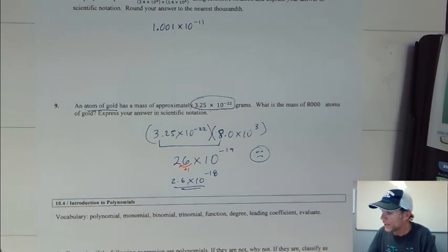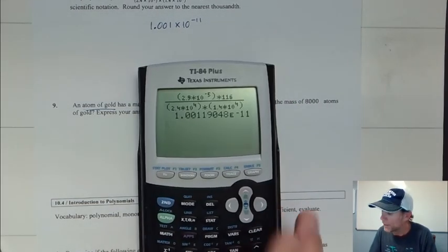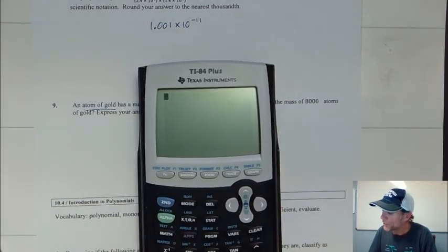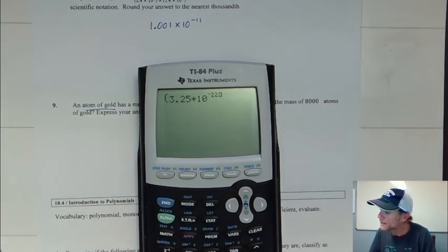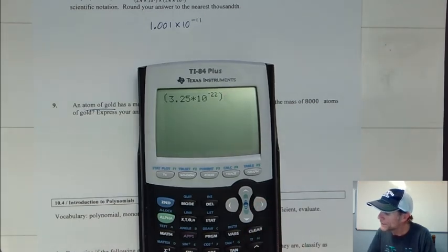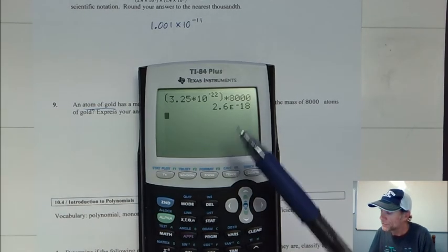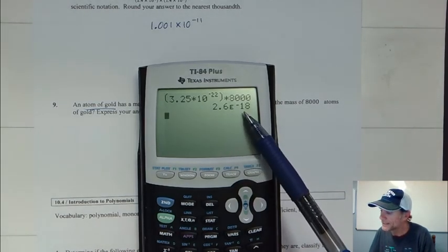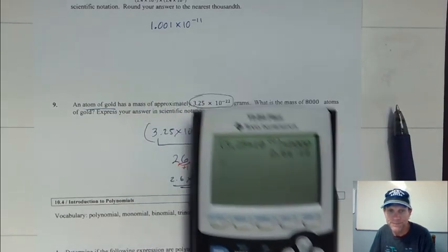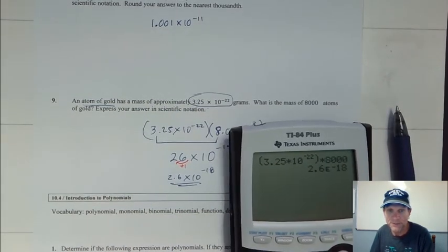If you use your calculator, you would take 3.25 times 10 to the negative 22nd times 8,000. And what we get is 2.6 times 10 to the negative 18th. See that? 2.6 times 10 to the negative 18th. Just what we got by doing the longhand.